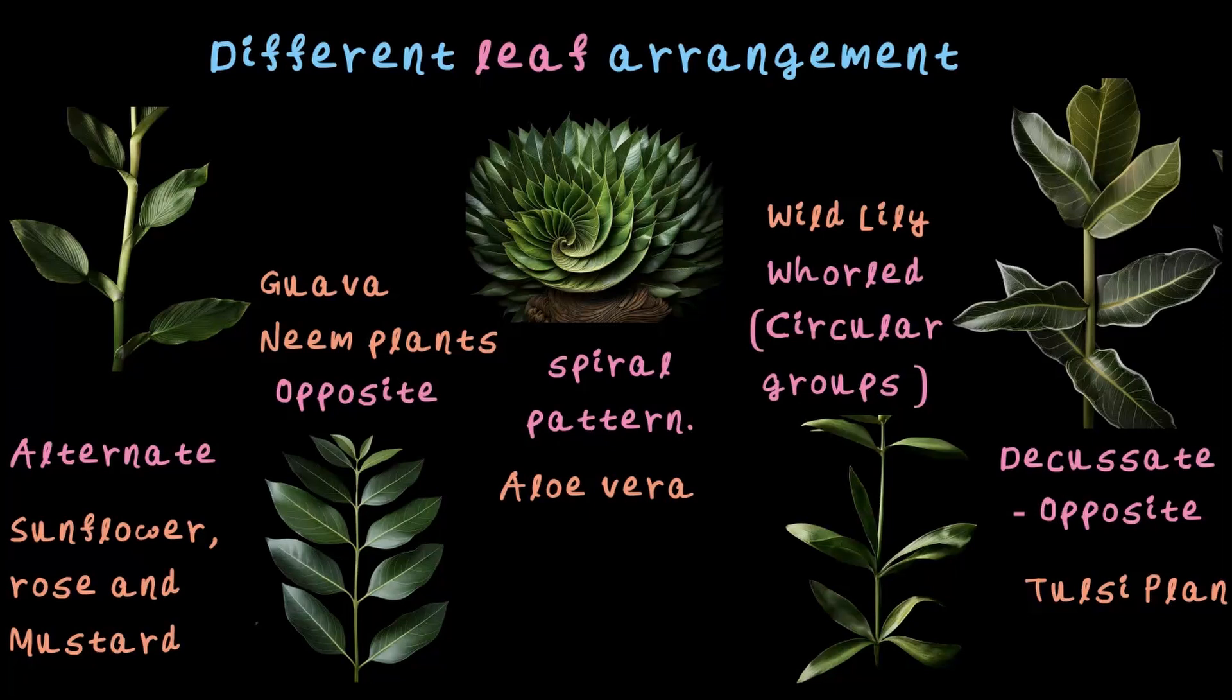These are the different ways leaves can be arranged on a stem. Each pattern is unique and now you know what to look for. Next time when you step out, just find out what type of arrangement the leaves have made on the stem.